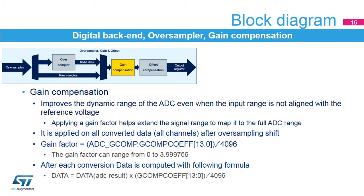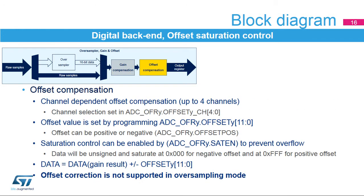A gain factor can be applied to raw samples to improve the dynamic range. The gain factor is applied after the oversampling and is programmable in the range 0 to almost 4. An offset Y, where Y is in range 1 to 4, can be applied to a channel by setting the bit offset YEN to 1 in the ADC OFRY register. The channel to which the offset applies is programmed into the 5-bit field offset YCH of the ADC OFRY register. The converted value is decreased by the user-defined offset written in the 12-bit field offset Y, and the result may be a negative value so the read data is signed.